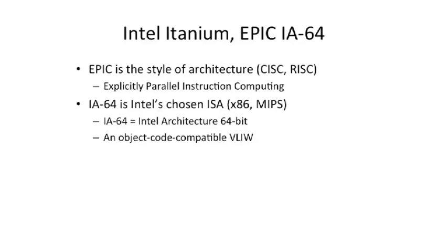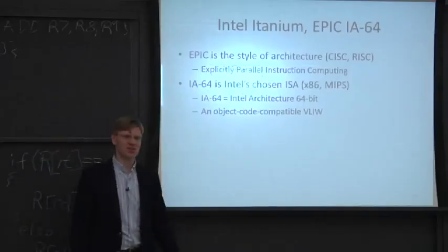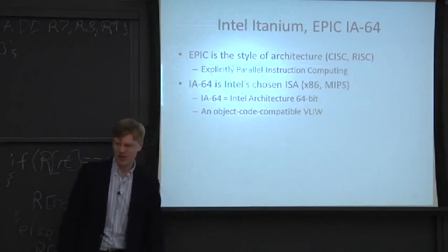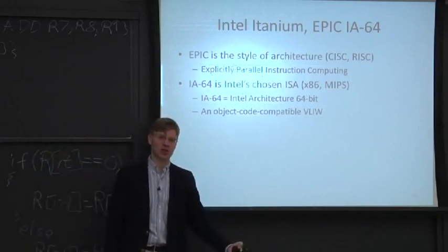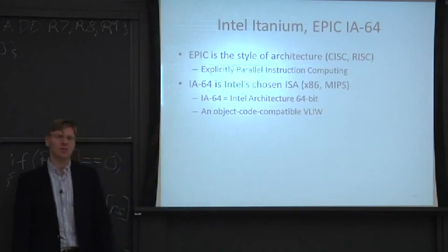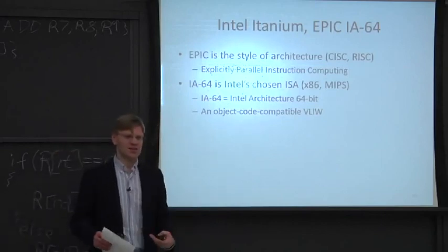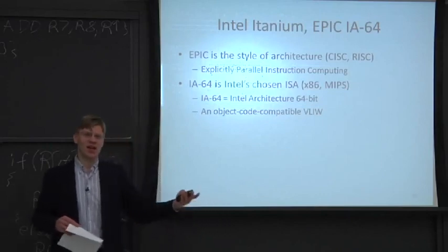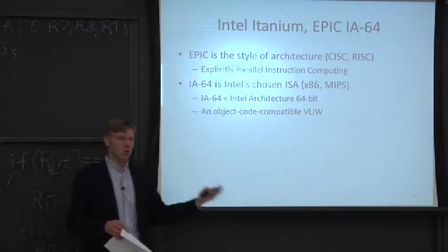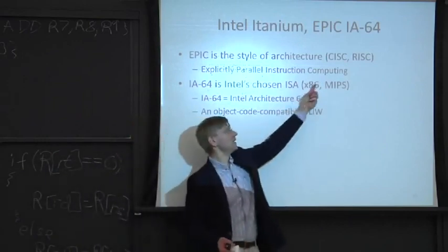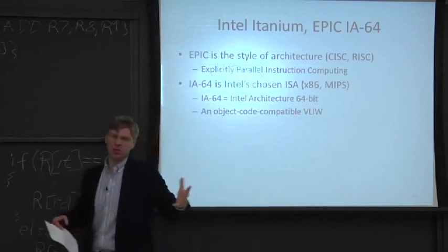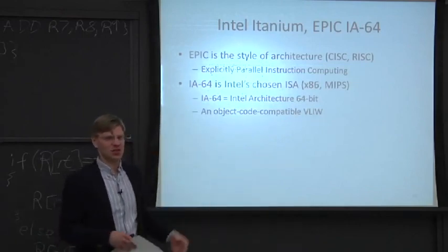Intel was going to deprecate x86 and choose IA64 as the 64-bit ISA. As we now know, that didn't really happen. Intel built a bunch of processors with this instruction set — you can still buy them — but it never got as good acceptance as the competitor, AMD64, which is a 64-bit extension to what people already had. And that's what people ended up wanting.